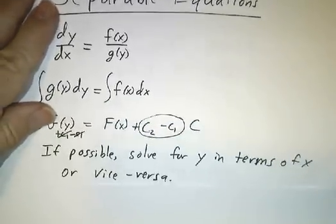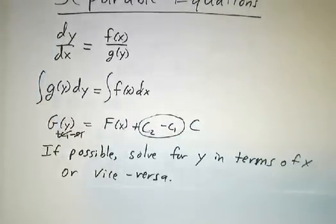Now once you've got it there, what you'd really like is to get y as a function of x, or maybe x as a function of y. It's not always possible. When it is possible, it's a good idea to do so. Okay, so let's take a look at an example.